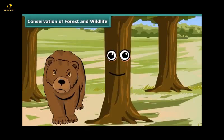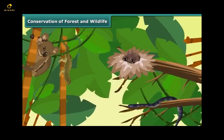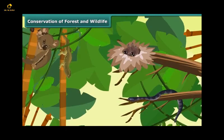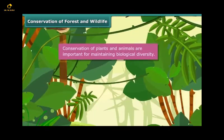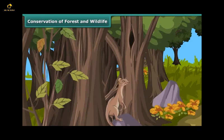Children, you have become aware of the effects of deforestation. So now you can understand that there is a need to conserve forests and wildlife. Plants and animals are needed for the sustained development of the Earth. Conservation of plants and animals is important for maintaining biological diversity, which is needed for the survival of humans.